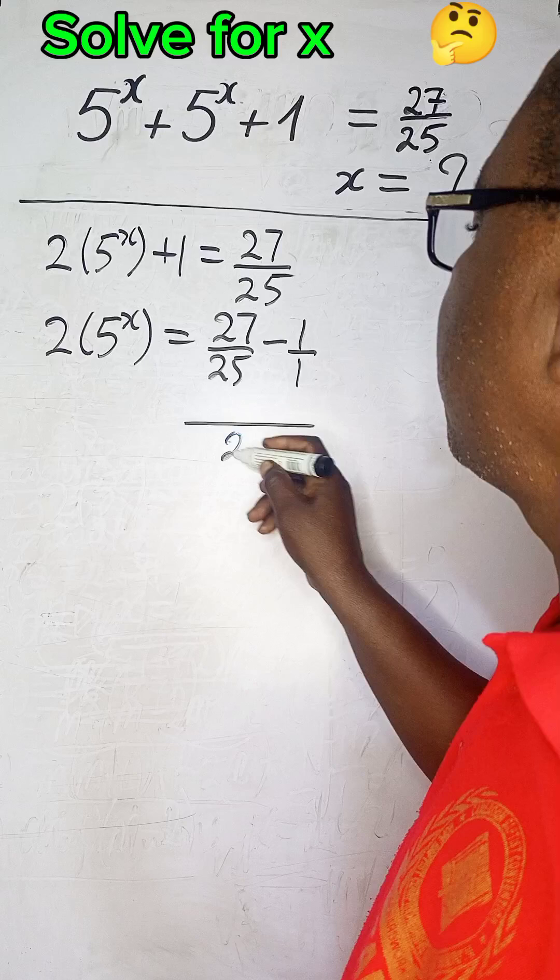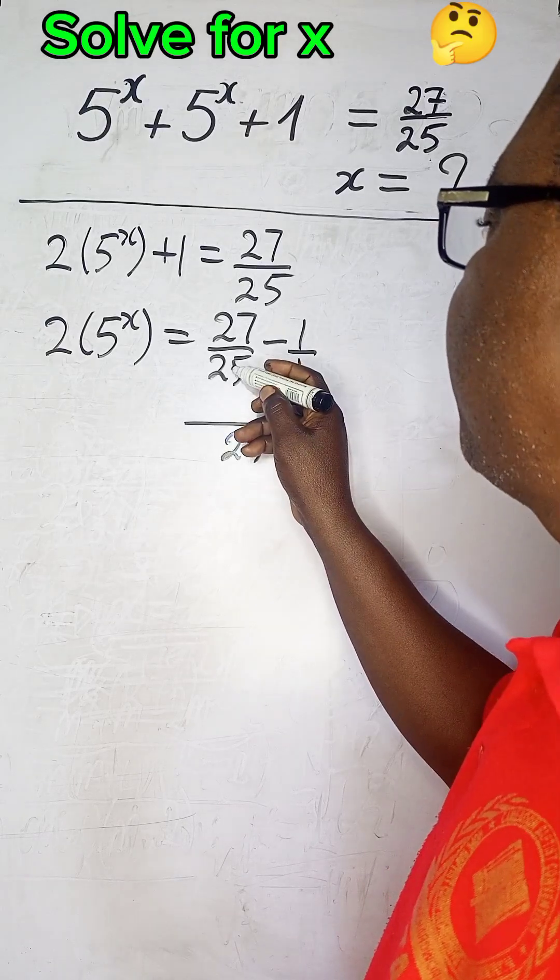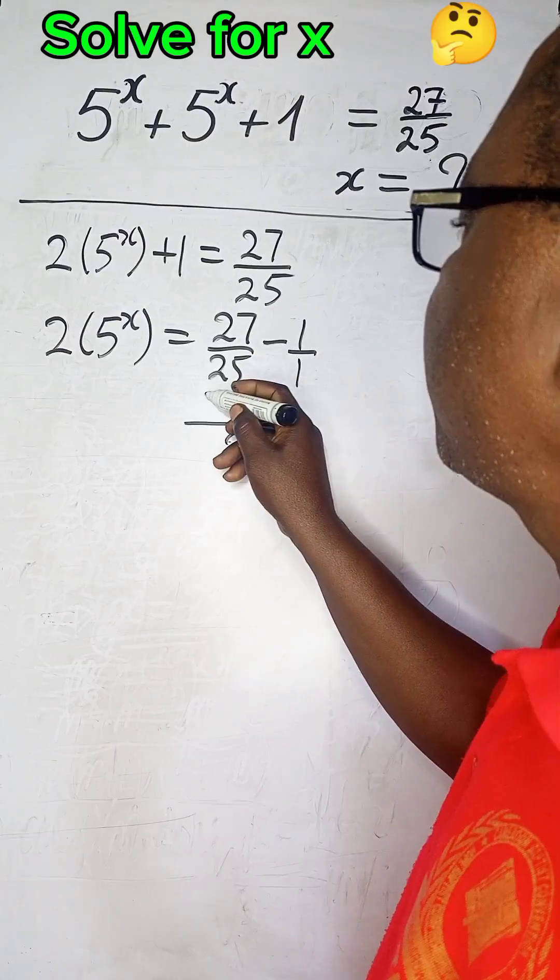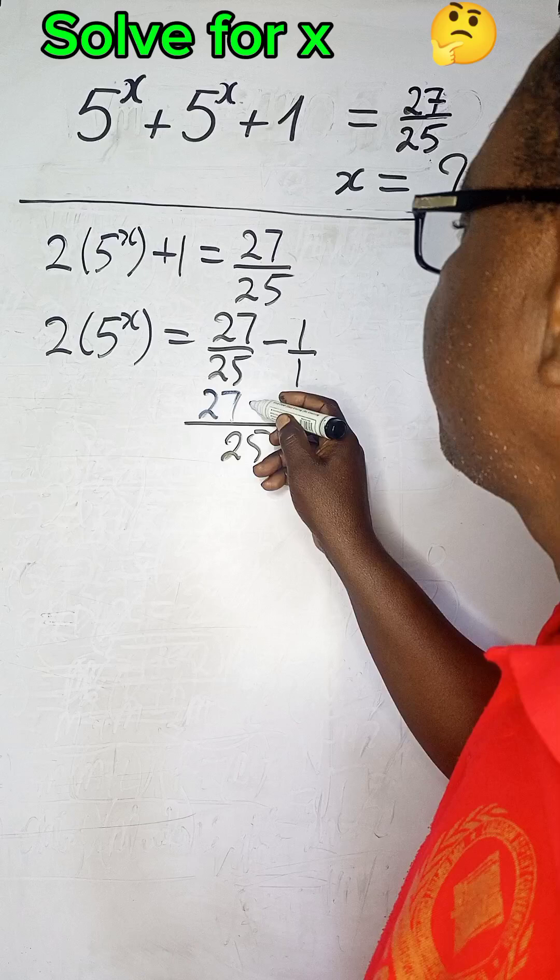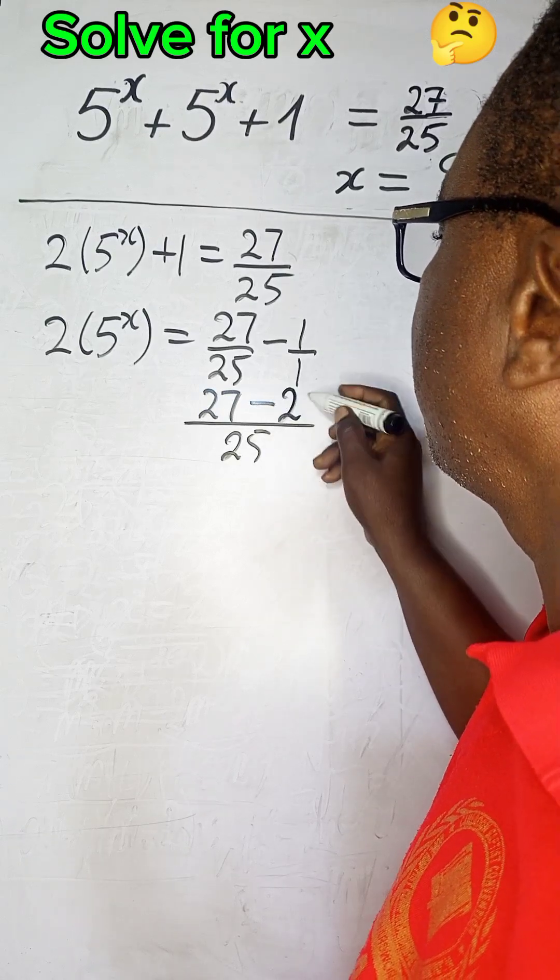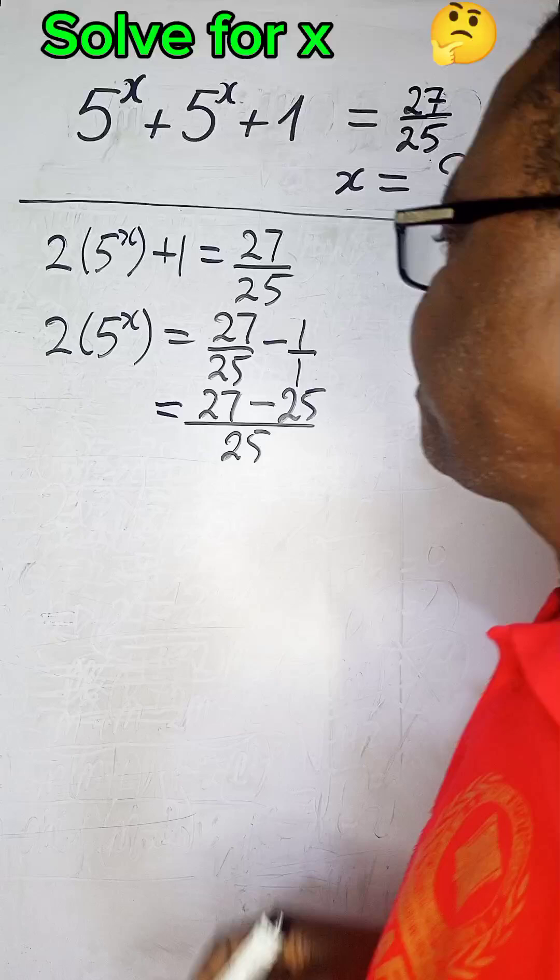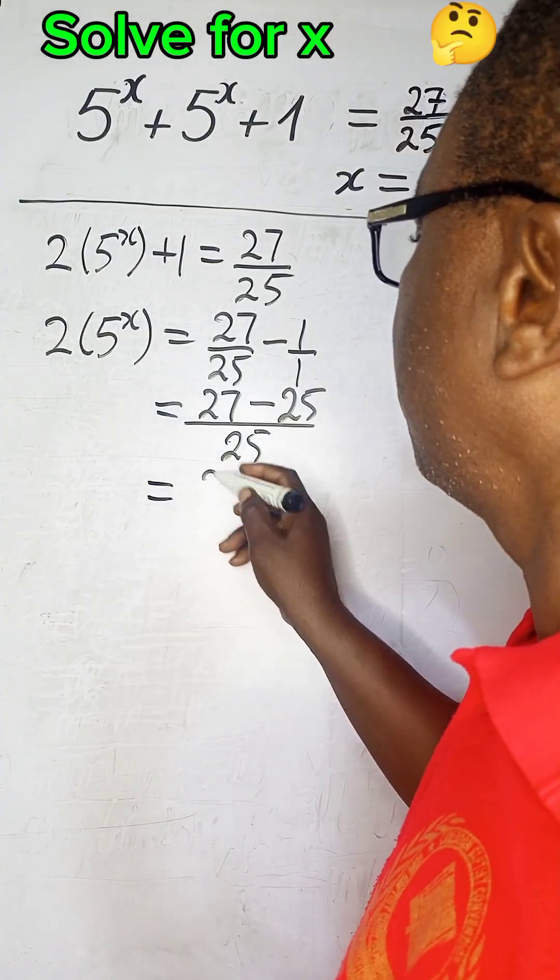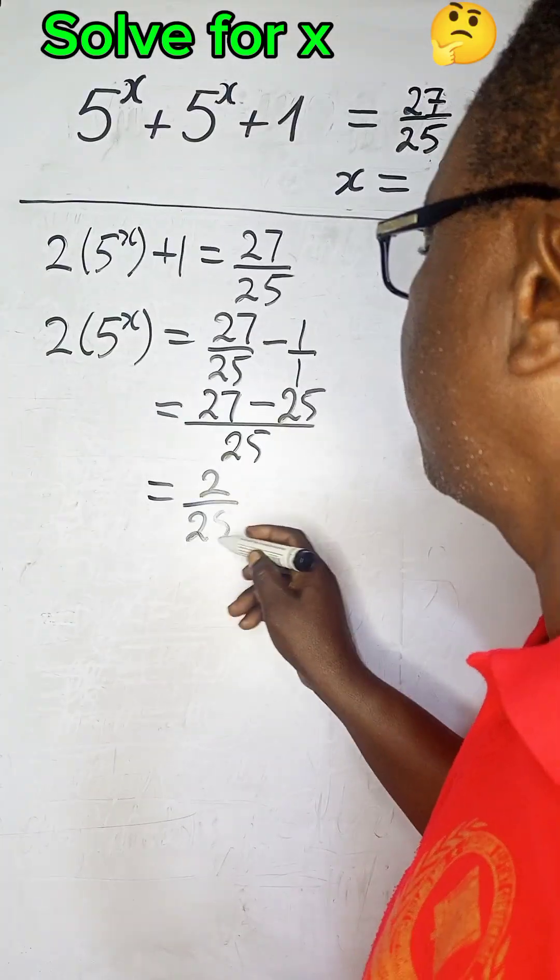LCM of 25 and 1 is 25. 25 divided by 25 is 1, 1 multiplied by 27 is 27 minus. 25 divided by 1 is 25 multiplied by 1 is 25. So, we obtain 2/25.